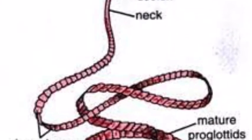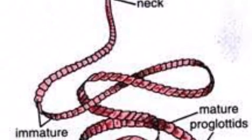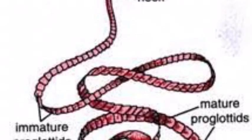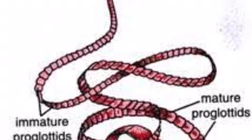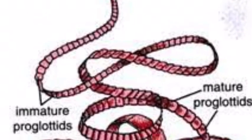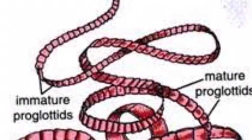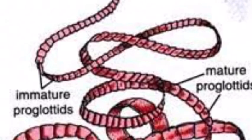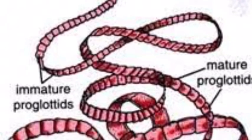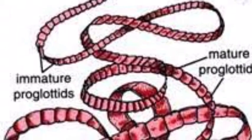Let us start with the structure of Taenia solium. It consists of the scolex, which is a distinct head that contains suckers and a rostellum, which is an organ of attachment. The body is a strobila, which consists of proglottids that contain a complete reproductive system.